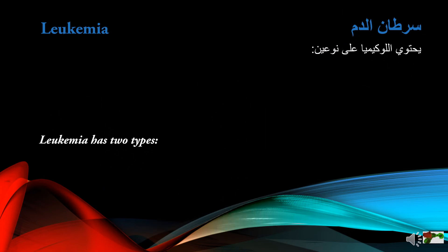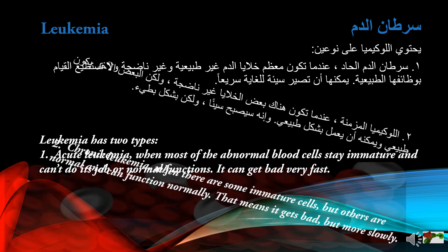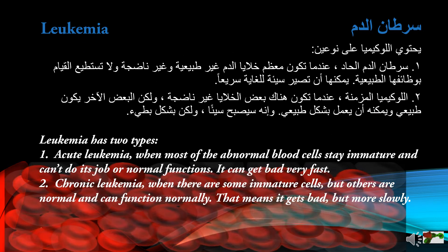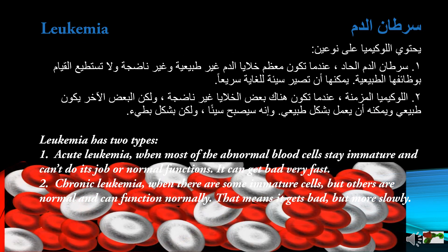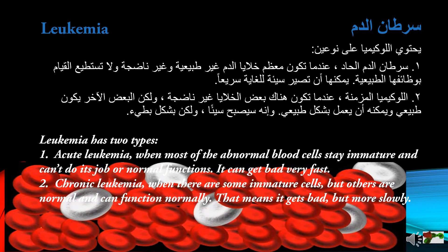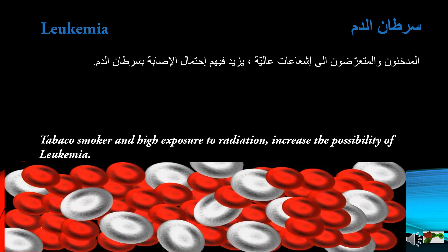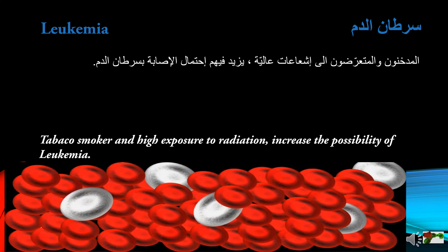Leukemia has two types. First, acute leukemia, when most of the abnormal blood cells stay immature and cannot do their normal functions — it can get bad very fast. Second, chronic leukemia, when there are some immature cells but others are normal and can function normally, meaning it gets bad more slowly. Tobacco smoking and high exposure to radiation increase the possibility of leukemia.